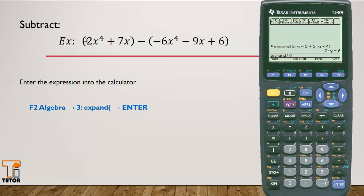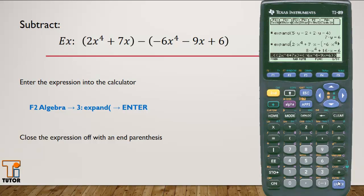Notice again, I'll use a begin parenthesis for my first term, which is a binomial. I'll close that off. Here I'm going to use a minus, and here I'm actually going to use a negative. I'll close off the trinomial, and also close off the expand function. And we have 8x to the 4th plus 16x minus 6. Thanks for watching.